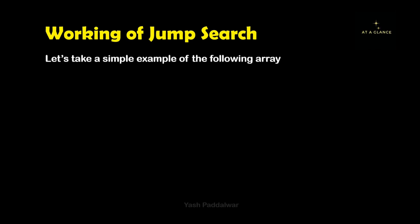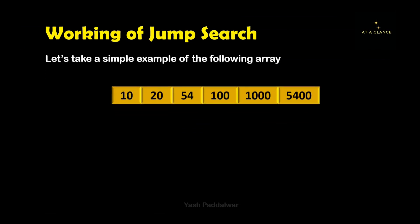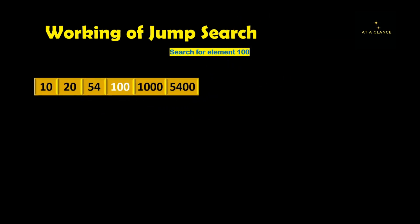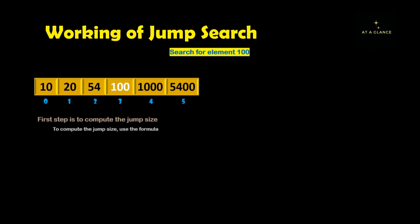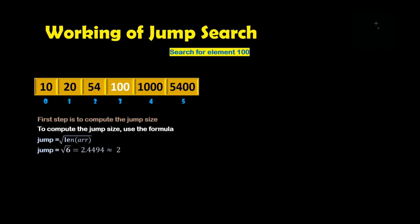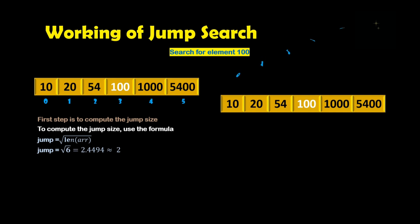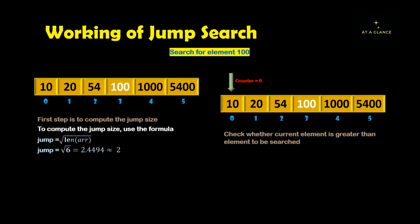Now let's have a look at the working of jump search with a simple example. Here we have taken an array of 6 elements whose indices start from 0 and end at 5. Let's say we need to search for the element 100. Since our data is already sorted we can proceed with the algorithm. If your data is not sorted, you can sort it by referring to my playlist on sorting. Now the first step is to find the jump size: square root of the length of the array. The length is 6, and its square root is 2.44, which rounds off to 2.